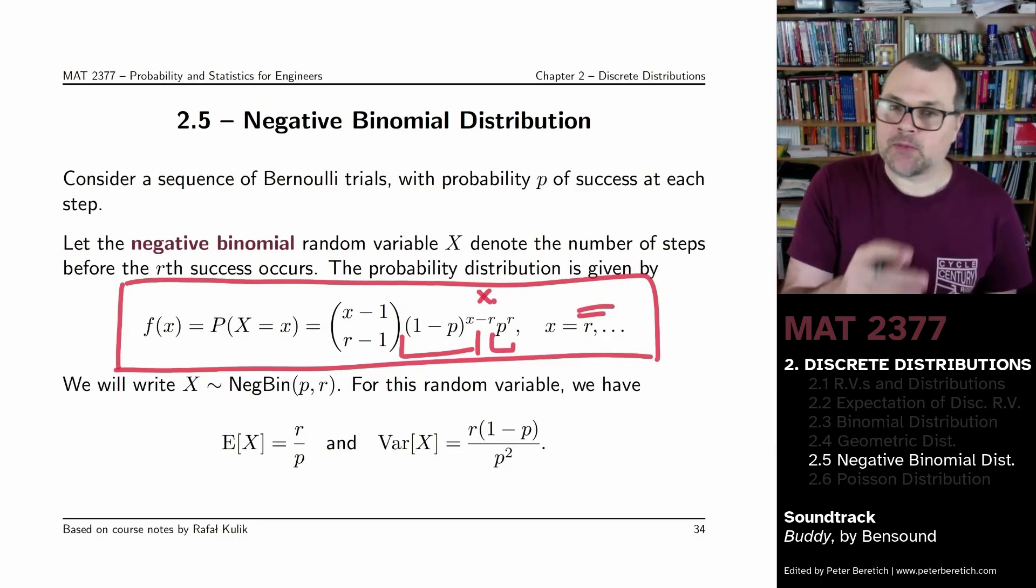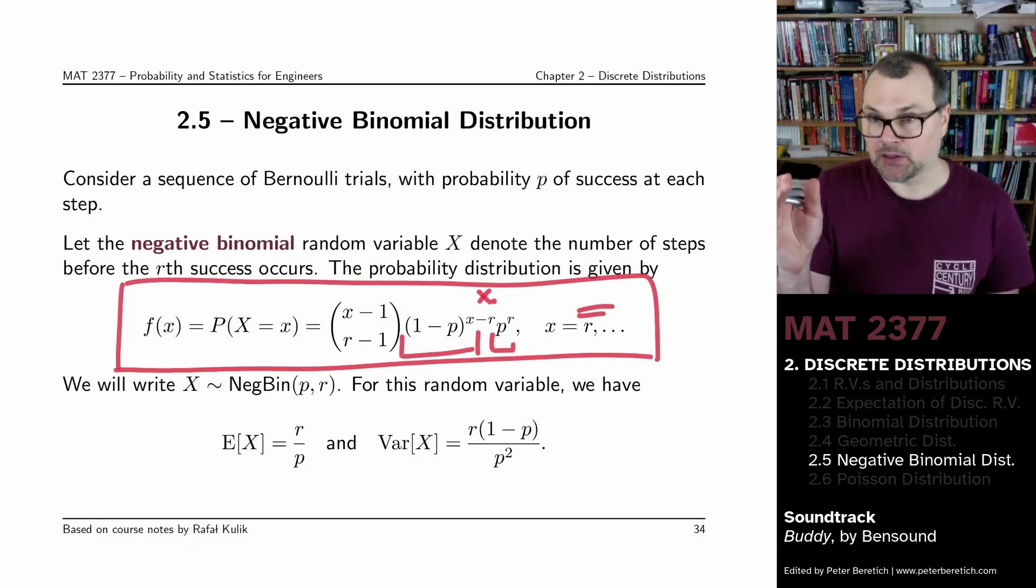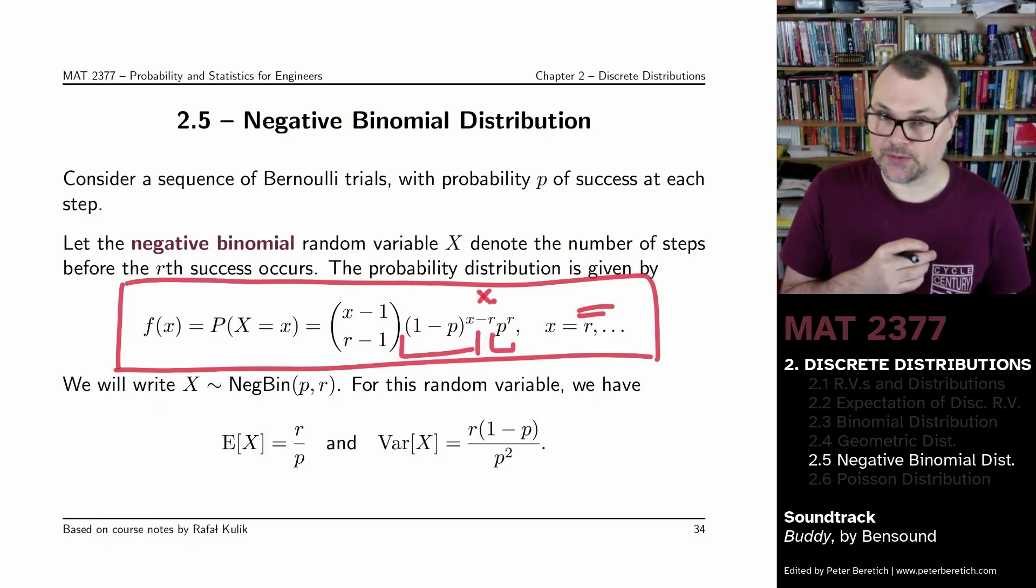What this means is that amongst the first X minus 1 trials, you have to have exactly R minus 1 successes. And the remaining trials have to be failures.